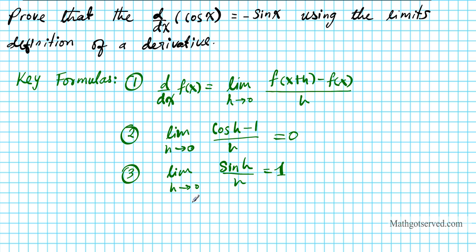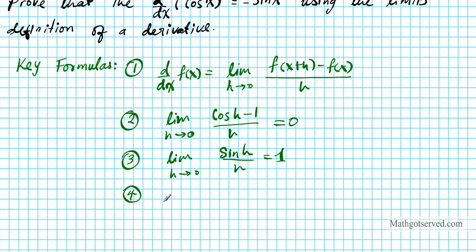The first one is the limit as h approaches 0 of (cos h - 1)/h equals 0. Number 3 is the famous sandwich or squeeze theorem: the limit as h approaches 0 of sin h over h equals 1. I have a clip explaining the derivation of this limit law.